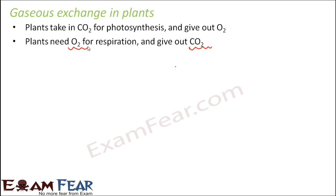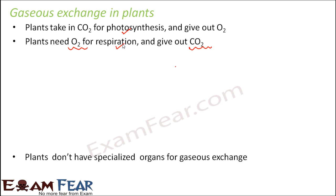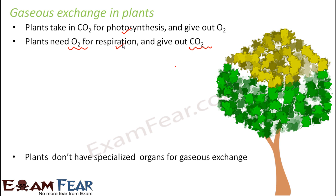In aerobic respiration you take in oxygen and give out carbon dioxide. These two processes, photosynthesis and respiration, highly complement each other. Now, in plants they do not have any specialized organs for gaseous exchange. How are they able to do this gaseous exchange? It is done through the tiny pores on the leaves called stomata, as well as through lenticels, which are tiny pores present on the stems of plants. So stomata and lenticels facilitate gaseous exchange in plants.